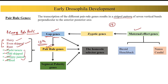The next type of segmentation genes, segment polarity genes, will be initiated or promoted by the pair rule genes. Segment polarity genes will decide the polarity of each segment. After that, the next gene that will activate from segment polarity genes are homeotic selector genes, because each segment will be provided identity by homeotic selector genes. I hope you liked this video — please hit the like button and subscribe to my channel. Thank you so much for watching.